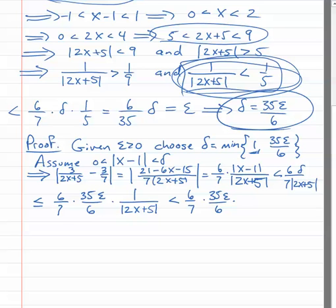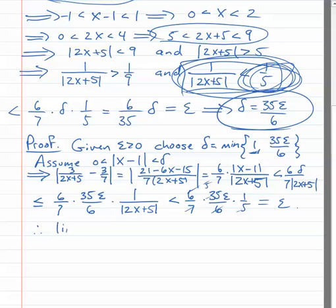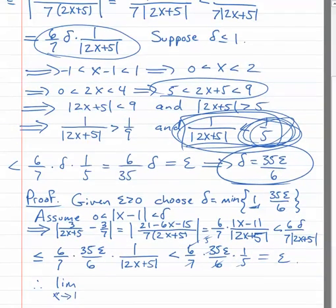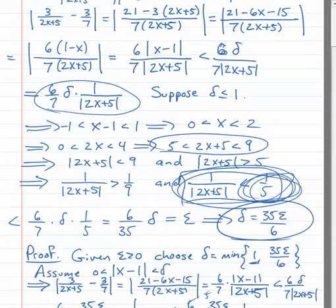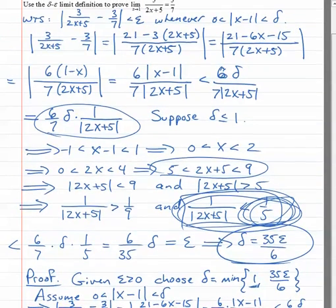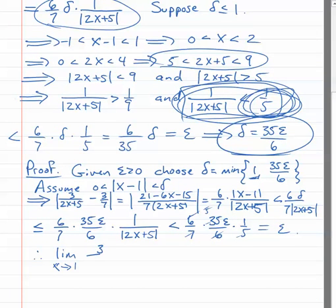Now, one over absolute value of two x plus five is less than one fifth. The sixes cancel, seven and thirty-five make five, and the fives cancel — that does give us epsilon. Therefore, by the delta-epsilon limit definition, the limit as x approaches one of three over two x plus five is equal to three sevenths.